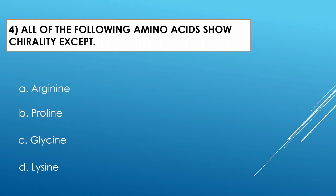Question number four: All of the following amino acids show chirality except: Option A: arginine. Option B: proline. Option C: glycine. Option D: lysine. The correct option is glycine, which does not show chirality.